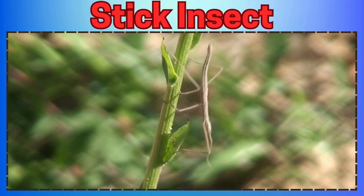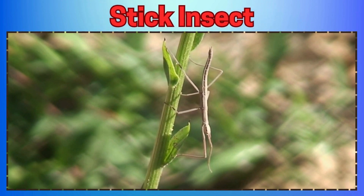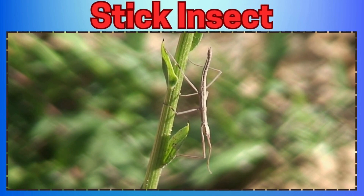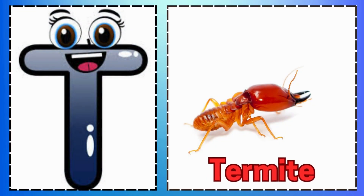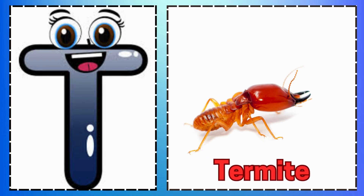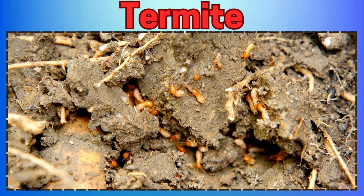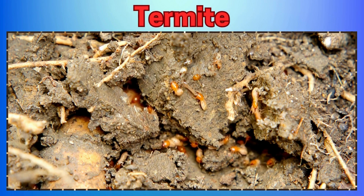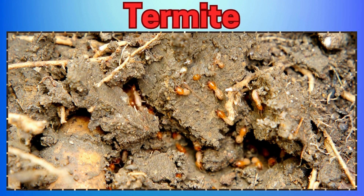E is for Earwig Hiding at Night. F is for Firefly Glowing so Bright. G is for Grasshopper Jumping up High. H is for Honey Bee. I is for Inchworm. J is for Japanese Beetle Shining Brave. K is for Katydid Singing at Night. L is for Ladybug, A Red and Black Sight.